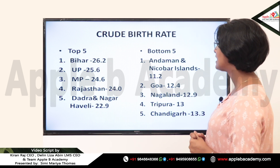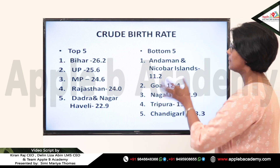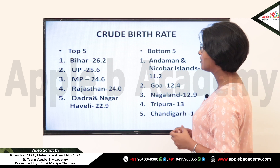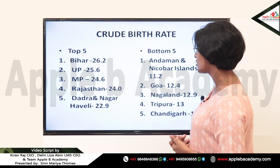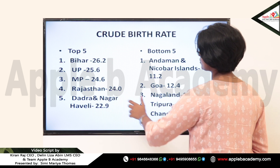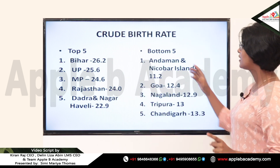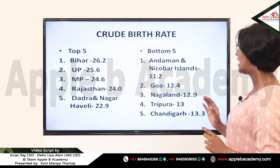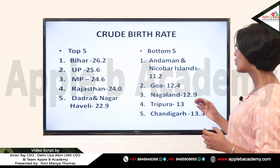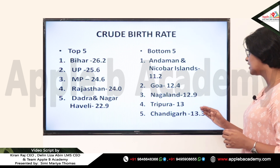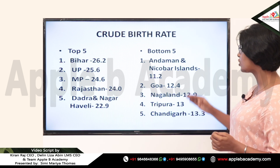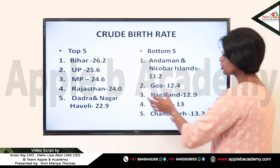For the top 5 and bottom 5 of crude birth rate per the SRS bulletin: Bihar tops the list with 26.2, followed by Uttar Pradesh, Madhya Pradesh, Rajasthan, and Dadra and Nagar Haveli as the fifth. For the bottom 5, Andaman and Nicobar Islands has the lowest at 11.2, then Goa at 12.4, followed by Nagaland, Tripura, and Chandigarh.